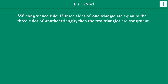So what is the SSS congruence rule? SSS — Side Side Side — congruence rule states that if 3 sides of one triangle are equal to 3 sides of another triangle, then we say that the 2 triangles are congruent.